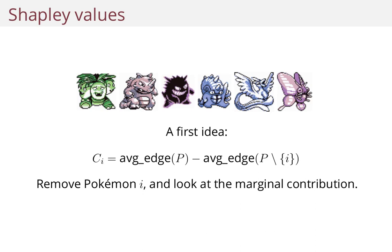So one idea is to take the score of the party and then subtract the score of the party without Pokemon i — that's the contribution of Pokemon i. It's like the marginal contribution.